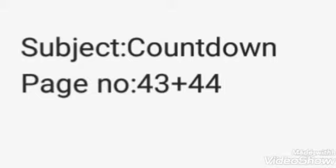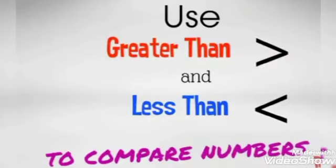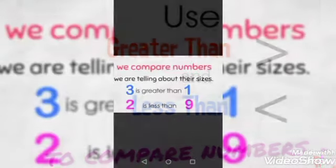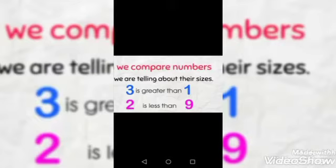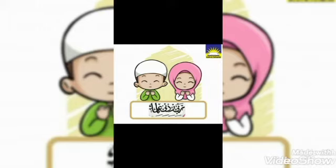Use of greater than and less than sign: when we compare numbers, we are telling about their sizes. But before starting, say three times 'Rabbi Zidni Ilma'. Okay students, let's start your work. Take out your Count On book at page number 43, mark date and day at the top of the page.